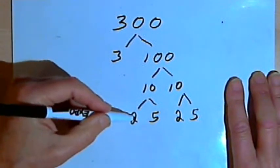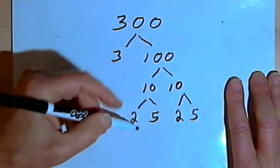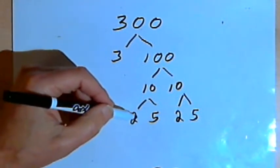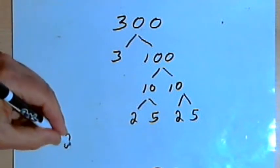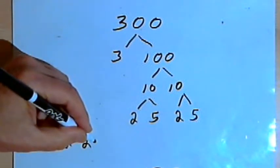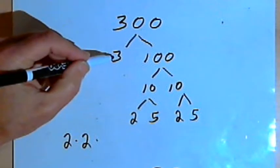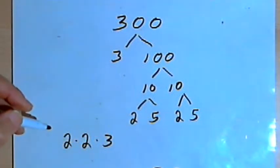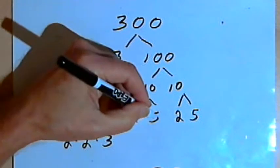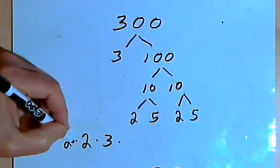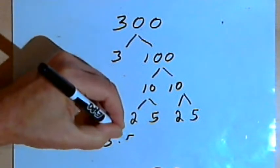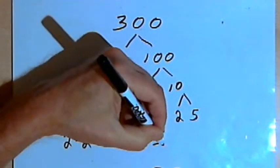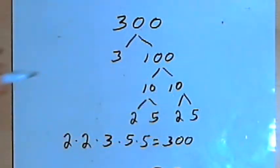What I'm gonna do now is write this in a more orderly manner. I'll start with the lowest factor that I have, which is a 2. I've got 2 of them. So I'm gonna write 2 times 2. I'll then go over to the 3. That's the next lowest number I've got as a factor. I've got 1 3. And then I've got these two 5s. So I've got 2 times 2 times 3 times 5 times 5. If I multiplied all of those together, I would get 300.